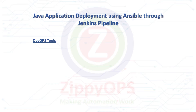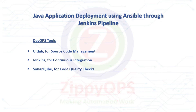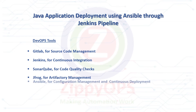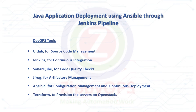The tools used in this Java application deployment are: GitLab for source code management, Jenkins for continuous integration, SonarQube for code quality checks, JFrog Artifactory to manage the binaries, Ansible for configuration management and continuous deployment, Terraform to provision the servers on OpenStack, and OpenStack as the private cloud.